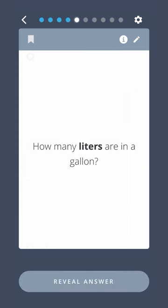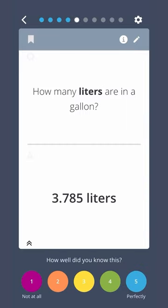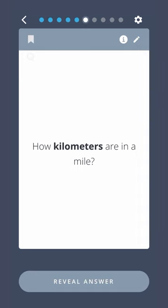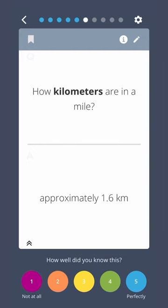How many liters are in a gallon? 3.785 liters. How many kilometers are in a mile? Approximately 1.6 kilometers.